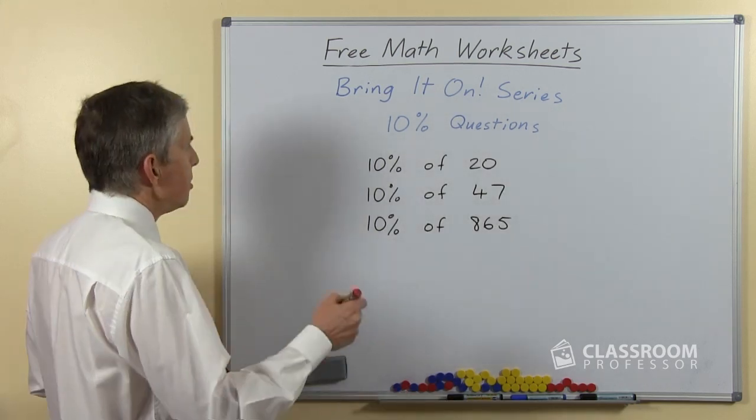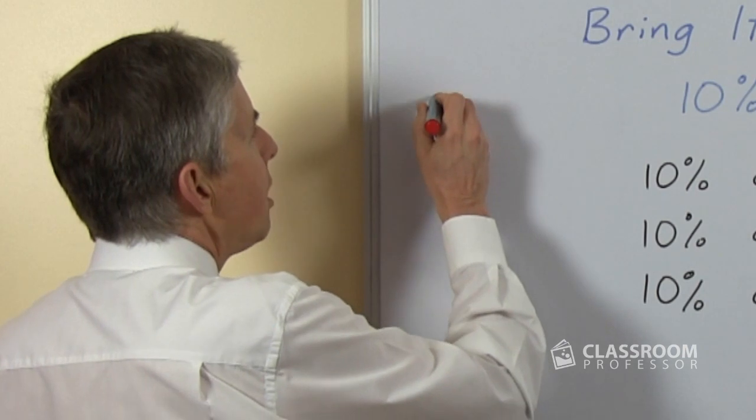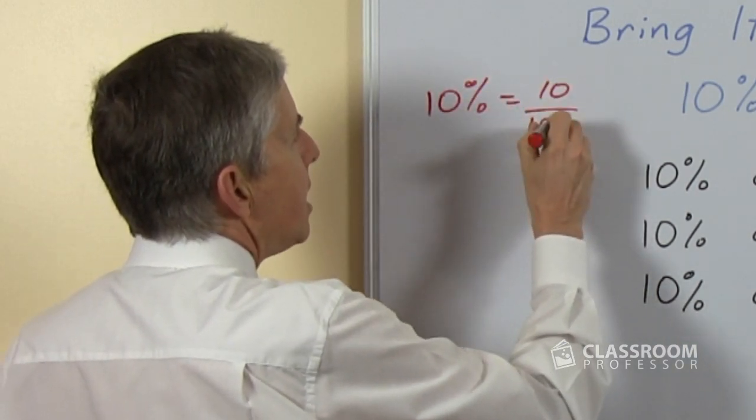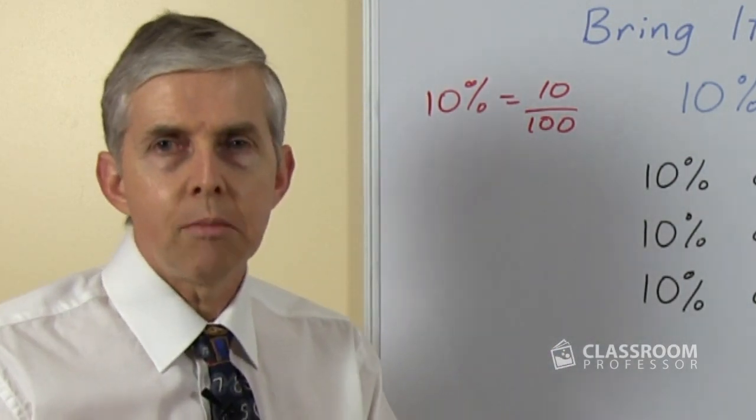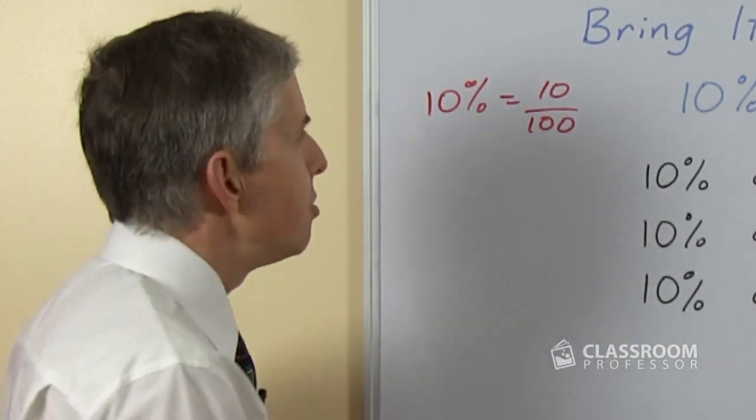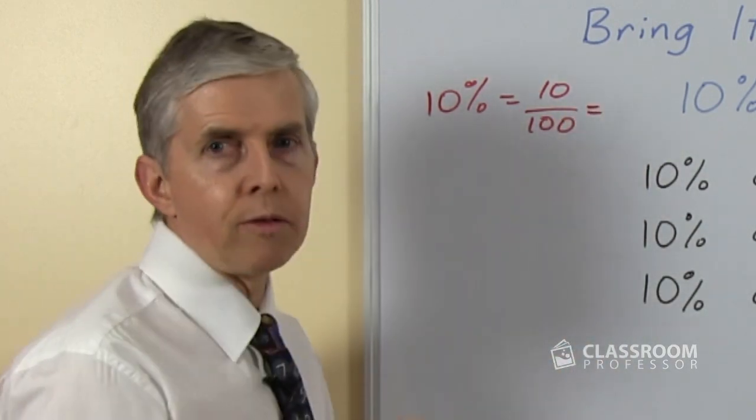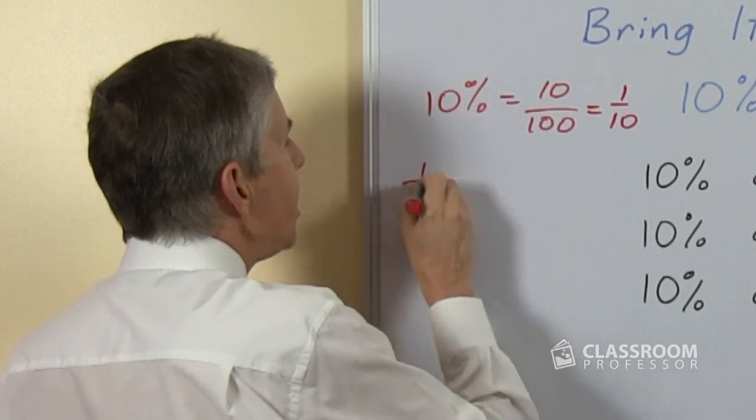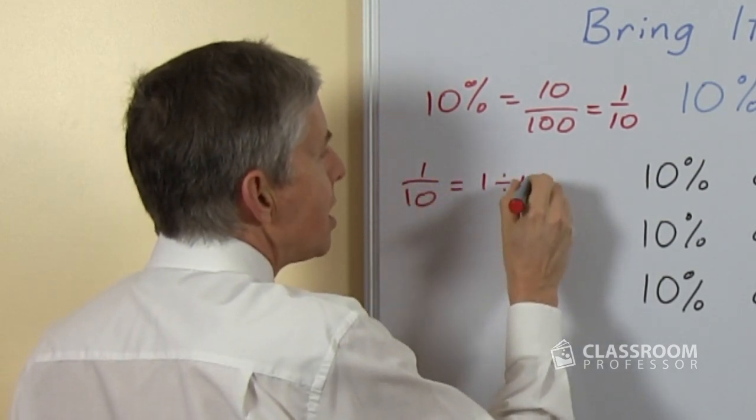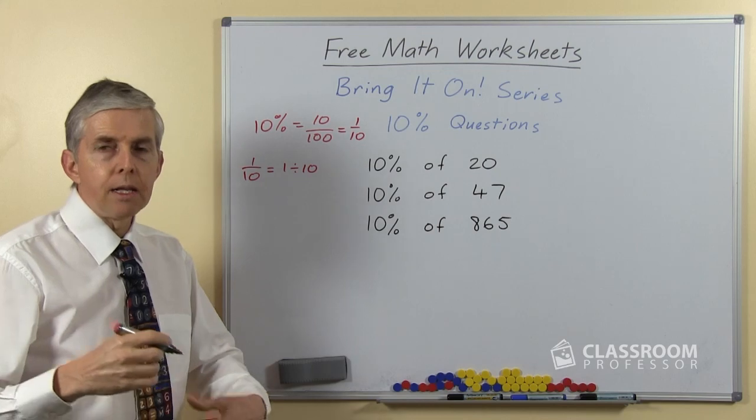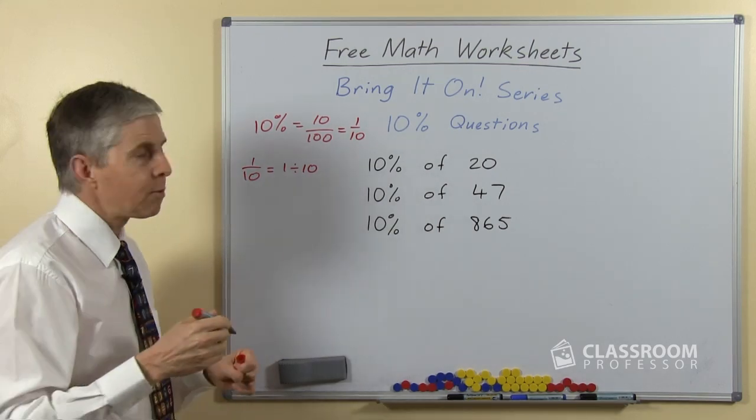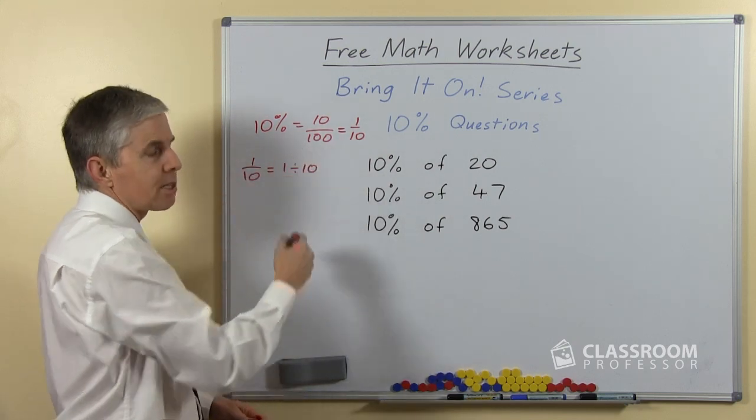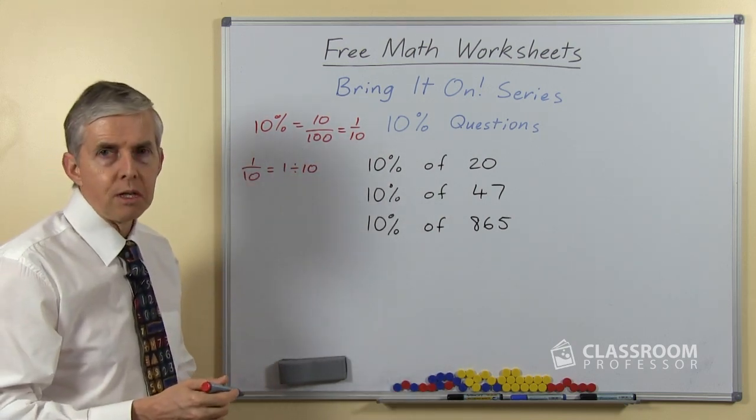Prior to this particular set of worksheets we would have done things like this with students to say 10% is the same as 10 hundredths because percent means per hundred or out of a hundred, and by using the knowledge we already have of simplifying fractions we can see that that's 1 tenth. And also because we've learned this before we know that 1 tenth is the same quantity as 1 divided by 10 so we can apply it as a division. So there's a number of prior steps that we would expect our students to have already learned.